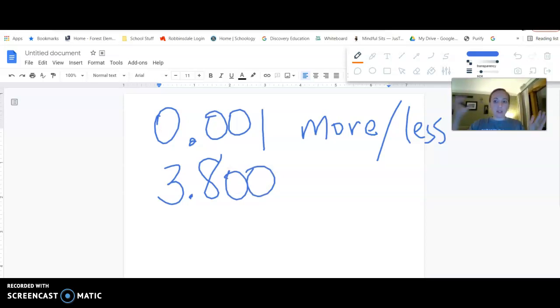Eight-tenths, eighty-hundredths, eight-hundred-thousandths, all equivalent. Just depending how many little pieces I split into. So, then I just can say, oh, well, less is three and seven-hundred-ninety-nine. I'm just taking away a thousand. Adding on more, I just get three and eight-hundred-one-thousandths.